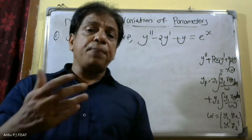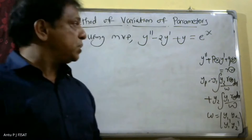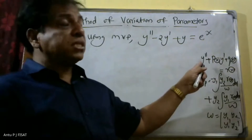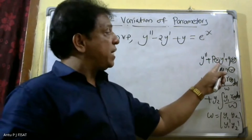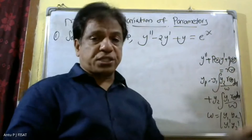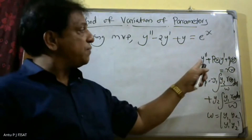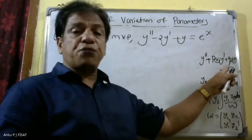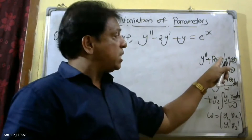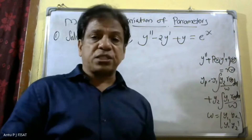When we apply the method of variation of parameters, the standard form is y double dash plus p(x) y dash plus q(x) y is equal to r of x. First we check whether it is in standard form: y double dash plus p(x) y dash plus q(x) y is equal to r of x.